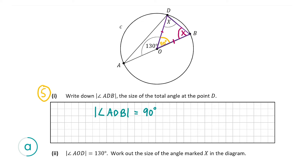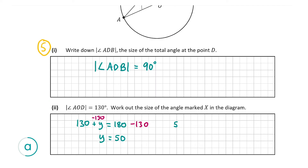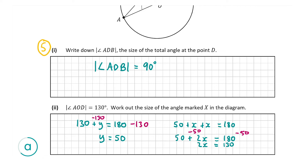We know there are 180 degrees in a triangle. One angle is 50 degrees and the other two are both x. So: 50 plus 2x equals 180. Taking away 50 from both sides gives 2x equals 130. Dividing both sides by 2 gives x equals 65 degrees. Therefore x is equal to 65 degrees — that's our answer for A part 2, worth 5 marks.